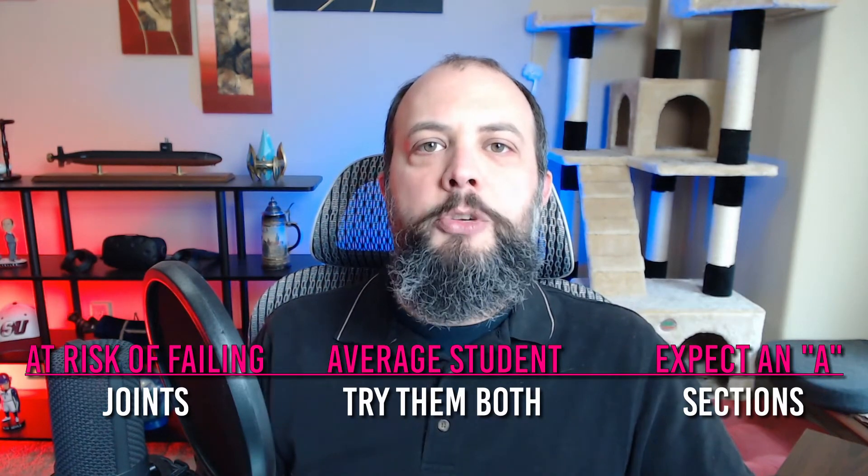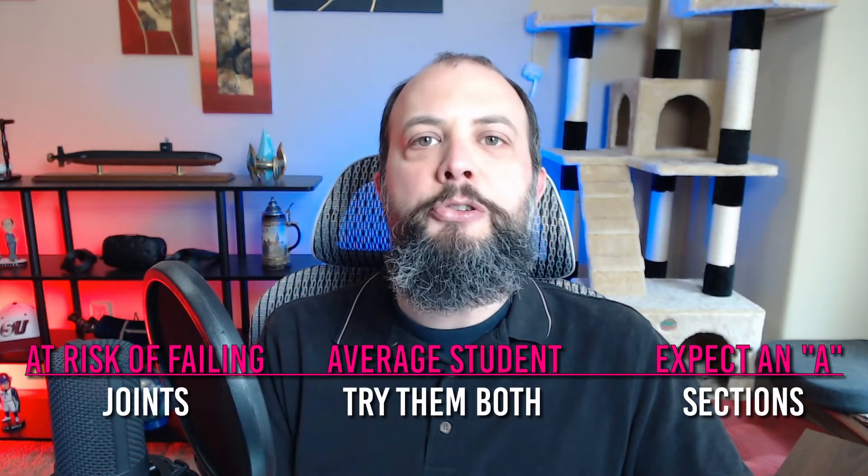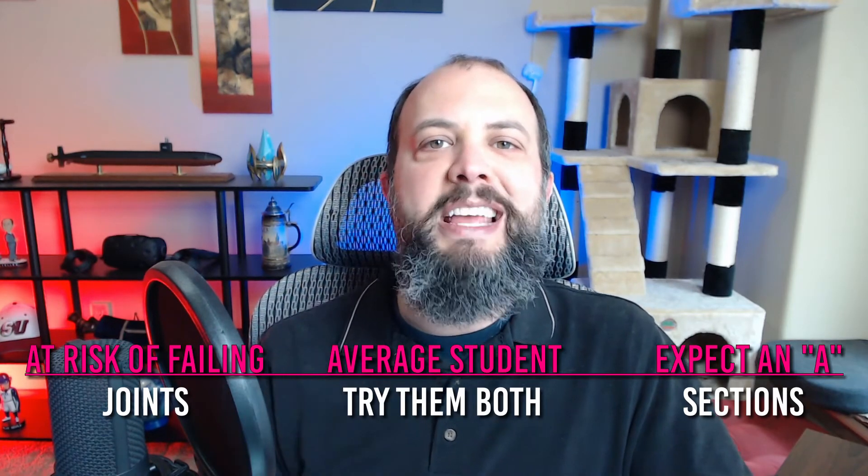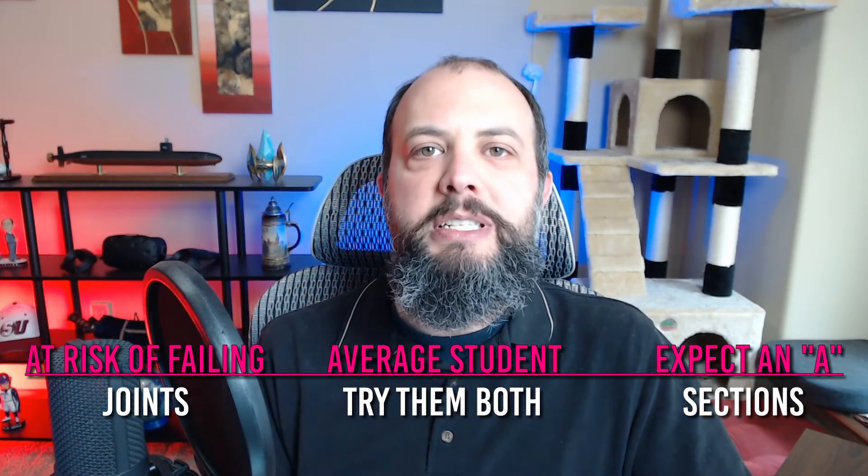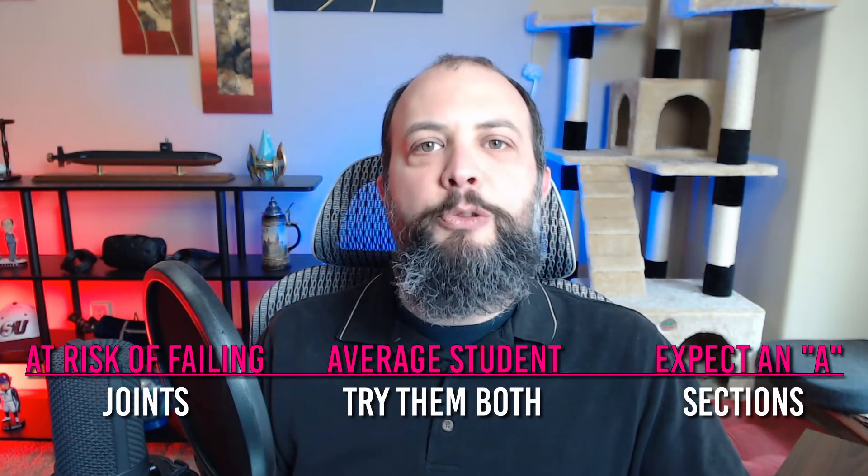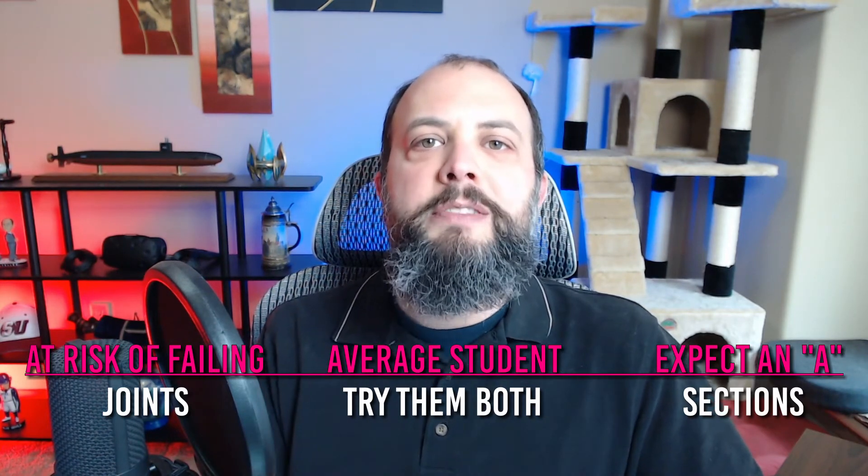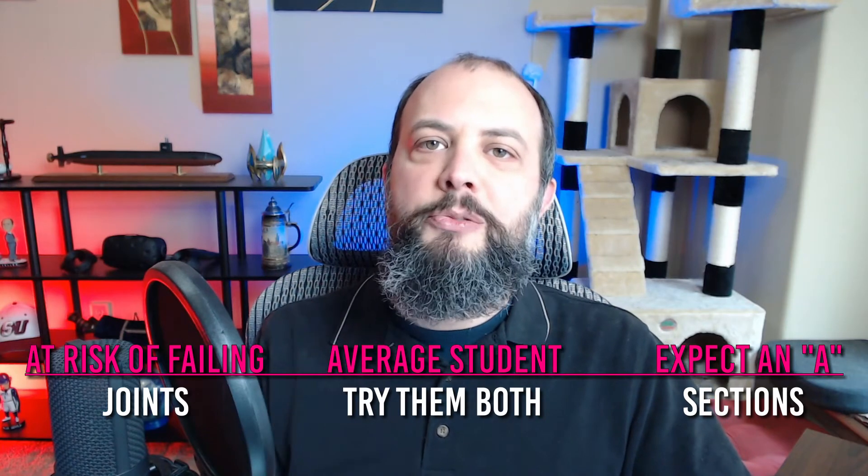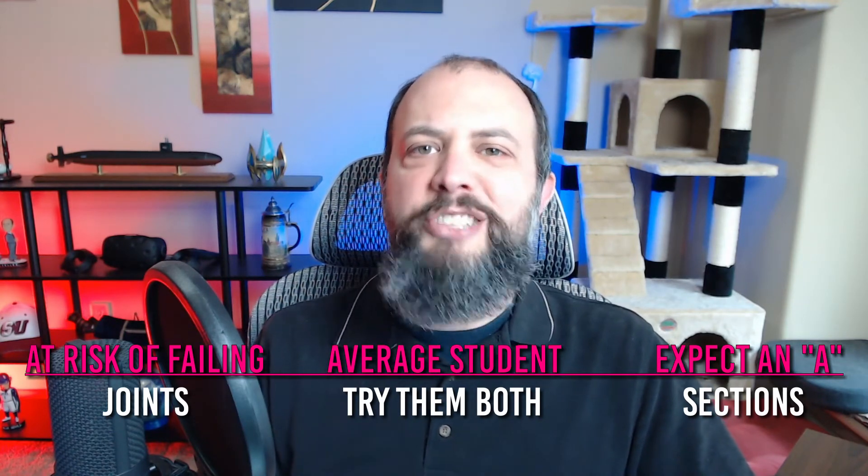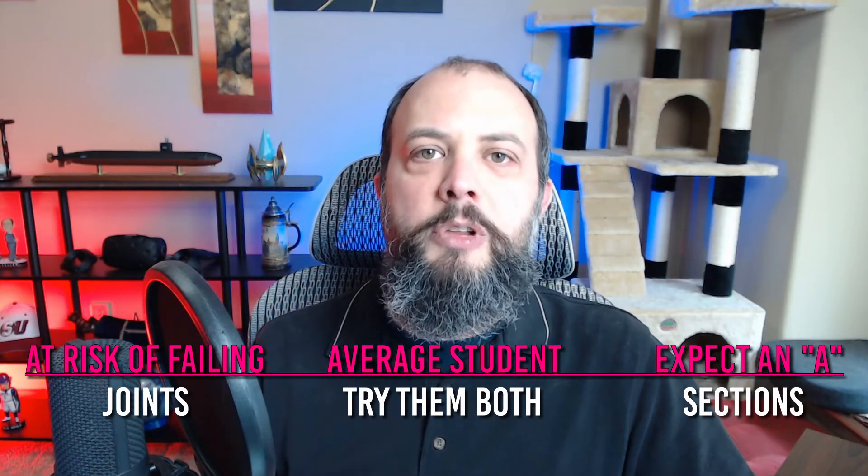Method of joints will almost always have more steps involved and for you that just means more opportunities to make a sign error or a calculator mistake. So if you can learn both methods equally as well you should default to method of sections which will have fewer steps which is less opportunity to make a math error since you're not as worried about making conceptual errors.